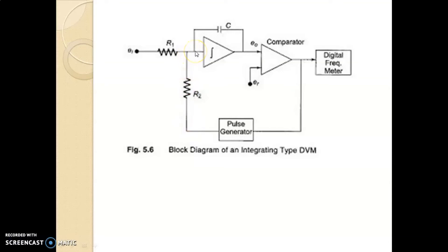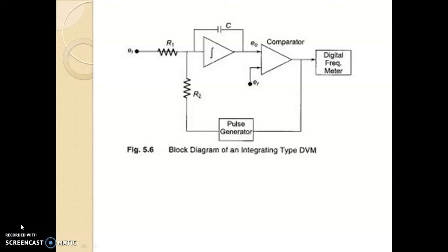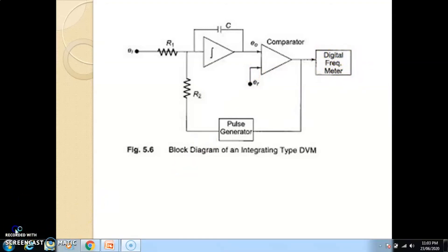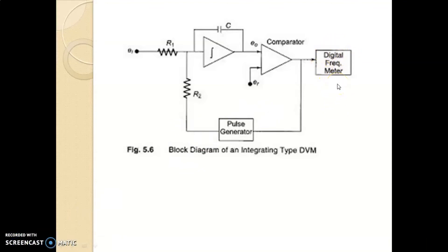As the comparator continuously changes state, the pulse generator generates pulses at a regular interval. These generated pulses at a regular interval are always proportional to the input voltage applied to the integrator. This pulse frequency signal is proportional to the input voltage, and the pulses are counted using a digital frequency meter and calibrated in terms of input voltage.